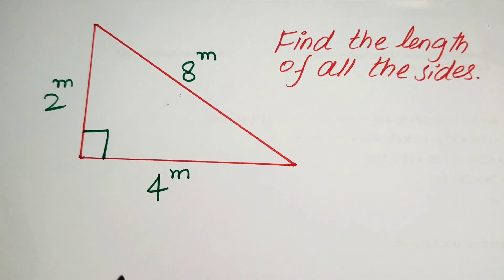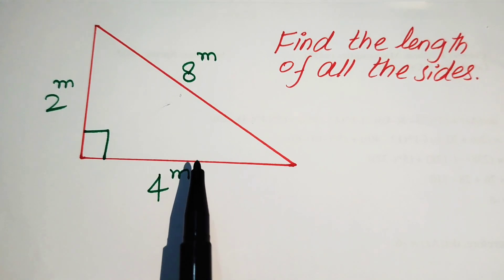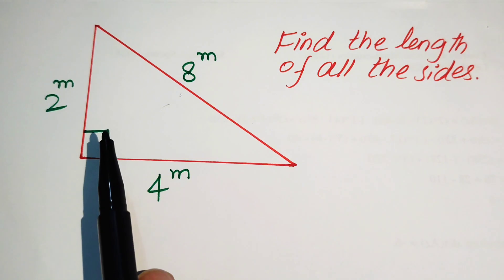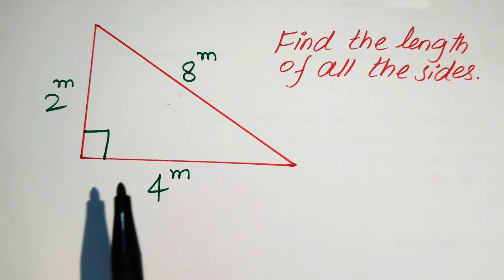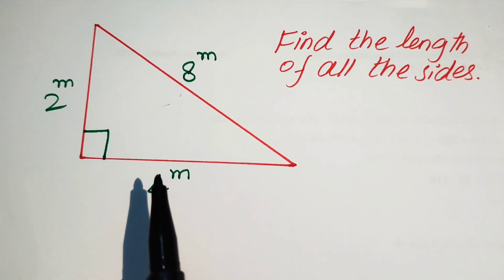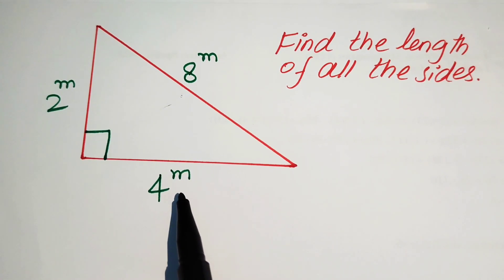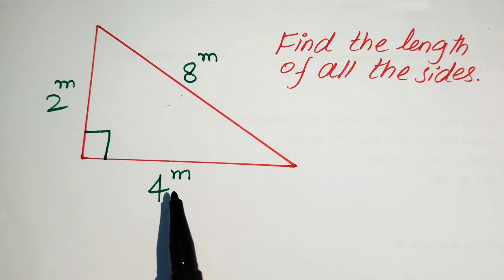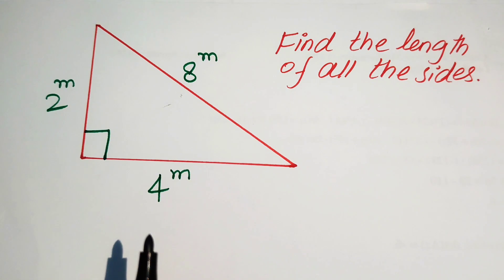Hello everyone, welcome. We will solve this math Olympiad geometry problem. We have a nice right triangle in which the lengths of its sides are 4 to the power of m, 8 to the power of m, and 2 to the power of m respectively. We need to find the simplified values of all the side lengths of this triangle. Since the unknown variable m is involved in all three sides, we first find the value of m and then find the length of all three sides.